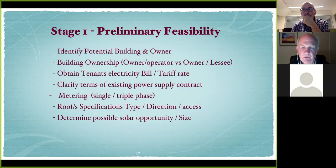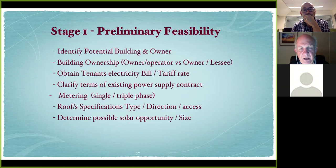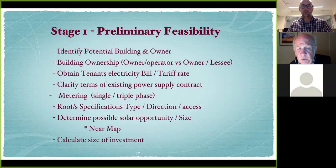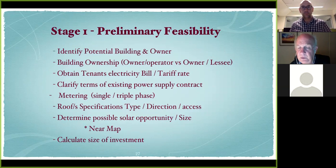BSG uses a program called Nearmap — a commercial subscription product. They zoom in on the nominated building to look at the roof and determine how many panels they can place, whether that's a 10, 20, 30, or 50 kilowatt system. This starts to reflect the cost of their investment. They also use the ATA Sunulator to assess return on investment and factor in how much sunlight a particular roof gets depending on its north, east, or west orientation. They run it through financial modelling including the Frontier Impact modelling and their own calculator, and they need to be aware of GST impacts — especially if operating as a not-for-profit.